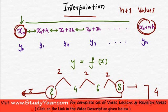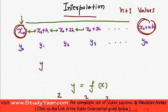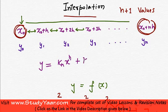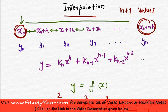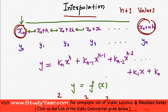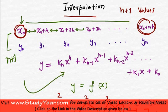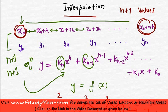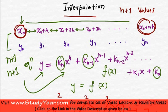One of the simplest methods to find a value between x0 and x0 plus nh is to assume that y is an nth-degree polynomial: kn·x^n plus kn-1·x^(n-1) plus kn-2·x^(n-2), and so on up to k1·x plus k0. You have n plus 1 values; substituting the corresponding x and y values gives n plus 1 equations with n plus 1 unknowns from k0 to kn, yielding y as a polynomial function of degree n.